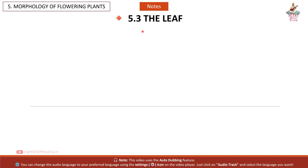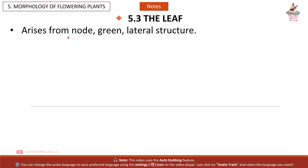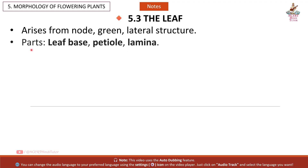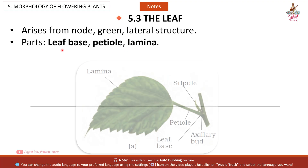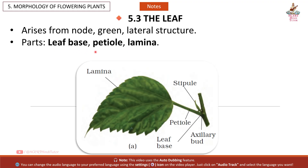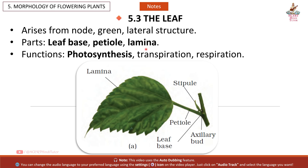5.3 The Leaf: Arises from the node; a green, lateral structure. Parts include leaf base, petiole, and lamina. Functions: photosynthesis, transpiration, and respiration.